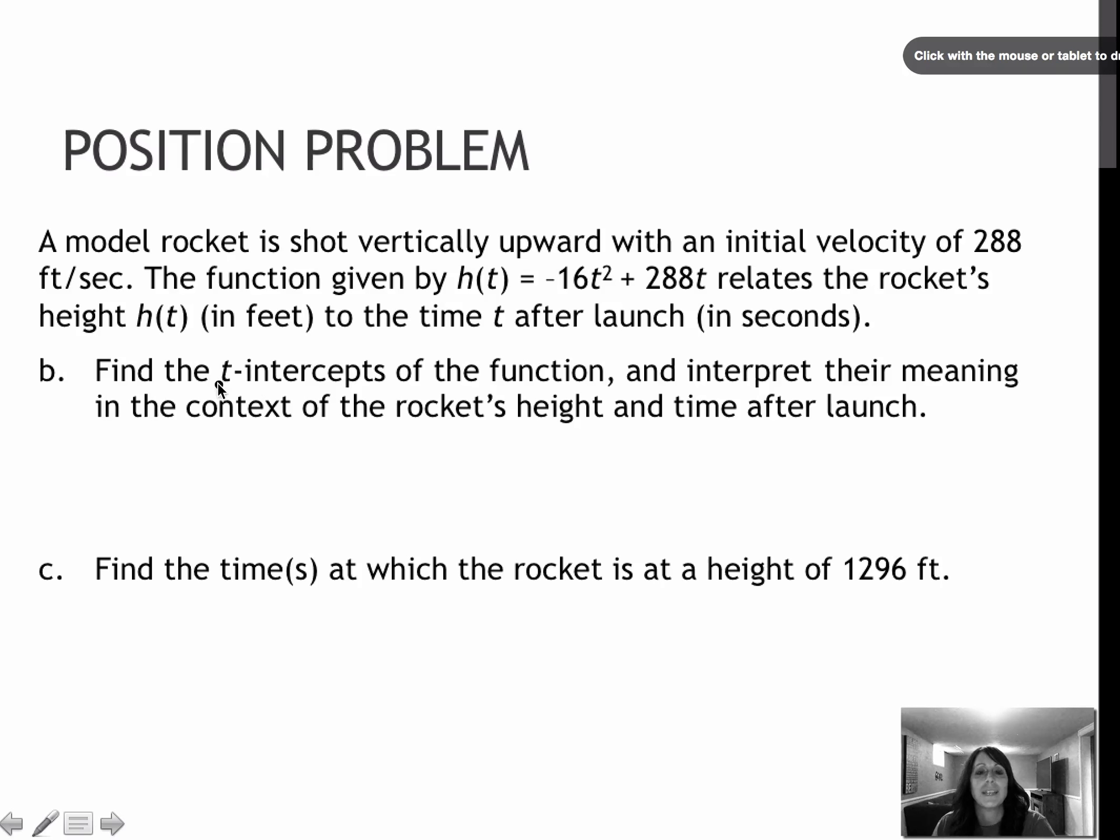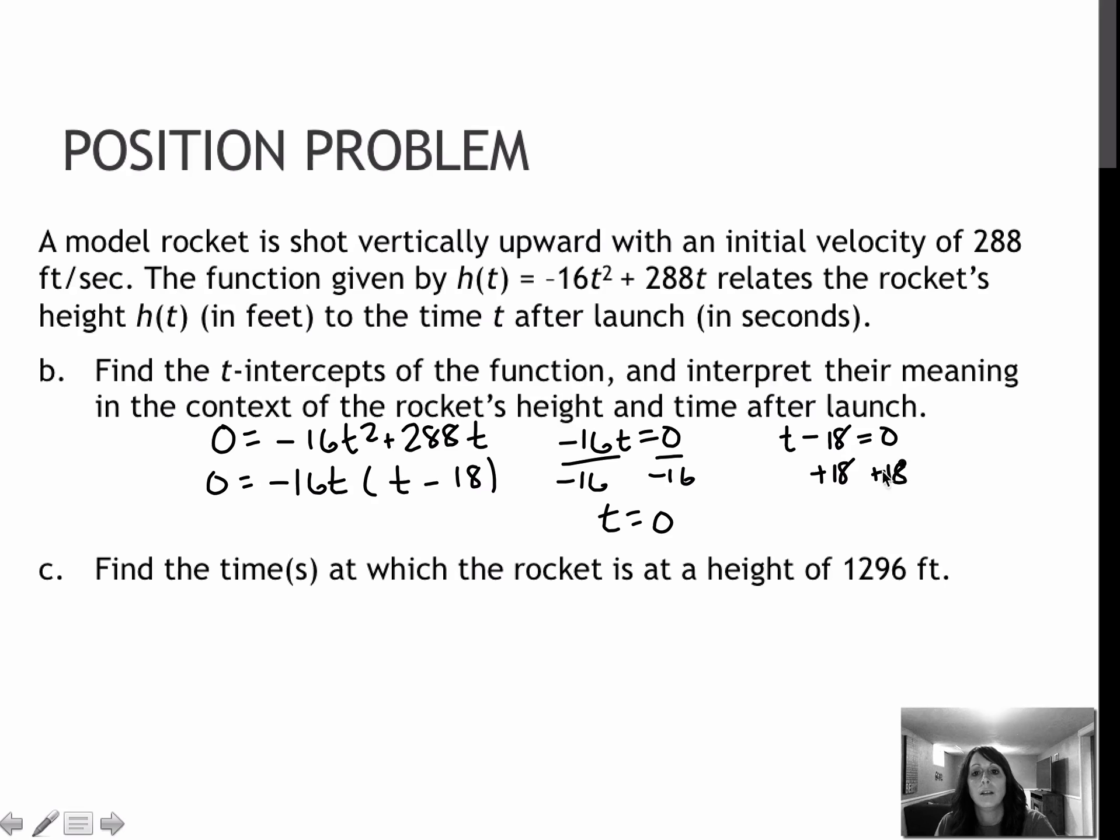For the next one, they're asking me for the t-intercepts, which basically means find the value of t when the height is zero. So that means I'm replacing h(t) with zero, so zero equals negative 16t squared plus 288t. To solve this, I would factor. I'm going to take a negative 16t out of both, which left me with t minus 18, and I'm going to set each of those equal to zero. So negative 16t equals zero, I would divide to get zero, and t minus 18 equals zero, I would add to get 18.